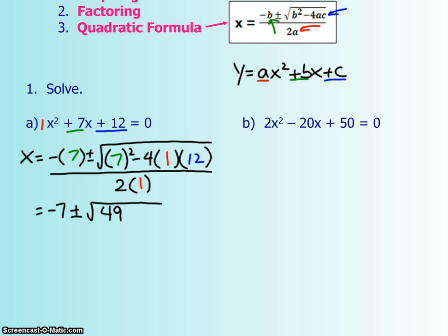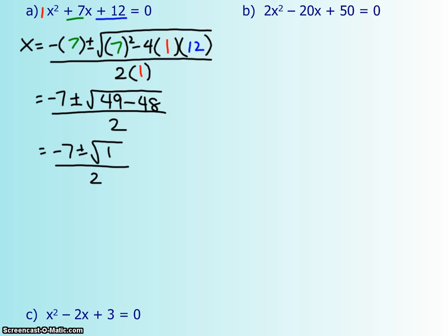7 squared is 49, minus 4 times 1 times 12 is 48, all over 2, which is negative 7 plus or minus square root of 1. And we can actually square root the 1, which is just 1. Our two answers will be negative 7 plus 1 over 2, or negative 7 minus 1 over 2. That gives us negative 3 or negative 4.